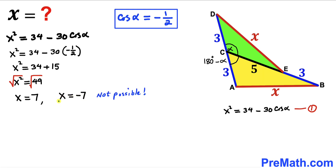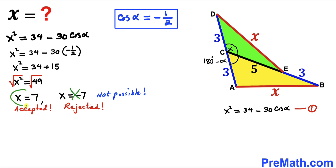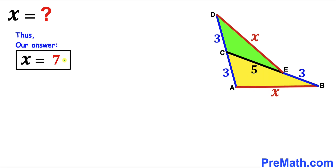Since x represents a side length, x = −7 is not possible, so we reject the negative value and accept x = positive 7. Thus our final answer is x = 7. Thanks for watching, and please don't forget to subscribe to my channel for more exciting videos. Bye!